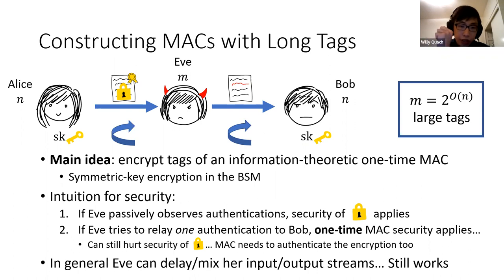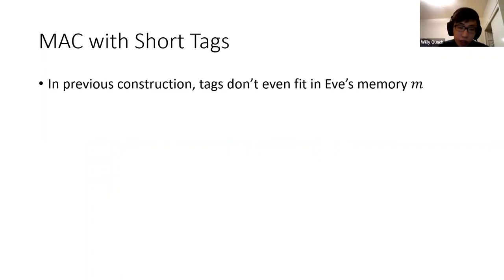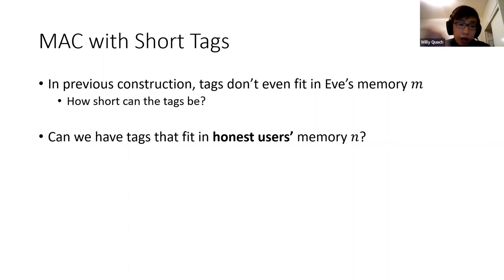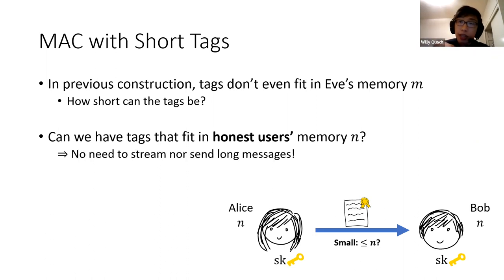What we obtain in the end is a construction of a MAC where the memory allowed for the adversary is exponential in the memory of the honest users, but the size of the tag is large — both features essentially inherited from the symmetric encryption. That raises a natural question: here tags don't even fit in Eve's memory, so Alice and Bob need to stream a lot of information to authenticate a single message. But is that inherent? Can we hope that authentication tags fit directly in the honest users' memory?